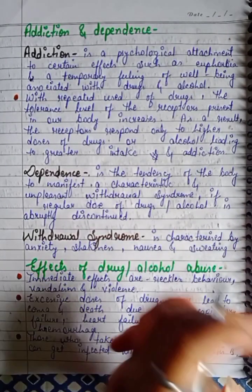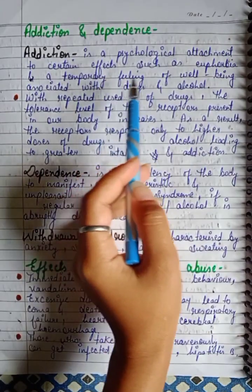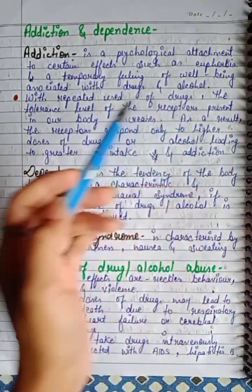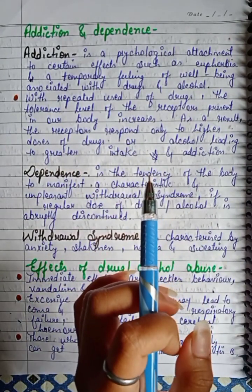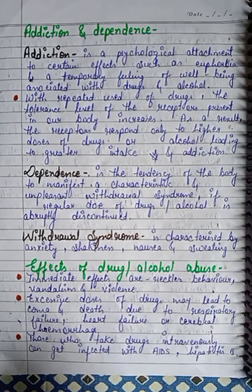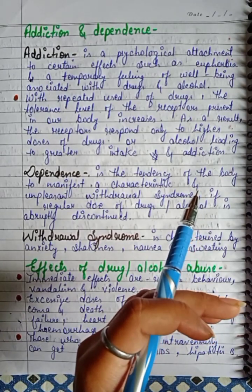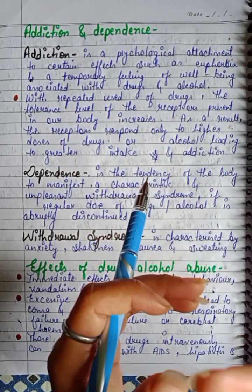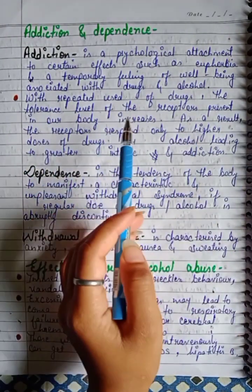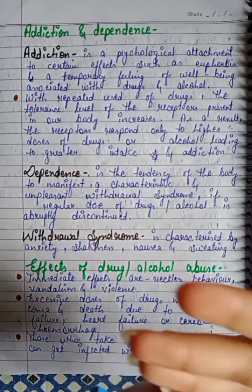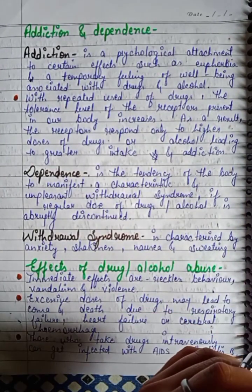Addiction is a psychological attachment to certain effects such as euphoria and a temporary feeling of well-being associated with drugs and alcohol. With repeated use of drugs, the tolerance level of the receptors present in our body increases.